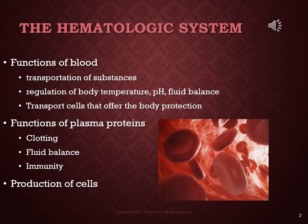The functions of blood include, number one, transportation of substances — these include oxygen and carbon dioxide, so blood is essential for the oxygenation of our tissues. It's also responsible for the regulation of body temperature, pH, which has to do with carbon dioxide, and fluid balance. It also transports cells that offer the body protection, such as the cells in the white blood cell family.